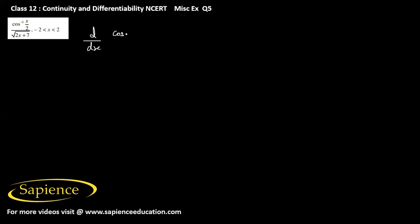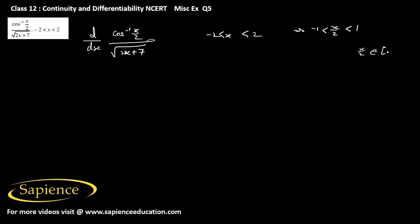Here we have to find the derivative of this function with respect to x. It means we have to find d/dx of cos inverse of (x/2) divided by square root of (2x+7), where x is greater than minus 2 and less than 2. This means x/2 is greater than minus 1 and less than 1, so x/2 belongs to minus 1 to 1 — it is within the domain of the cos inverse function.